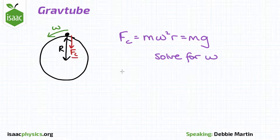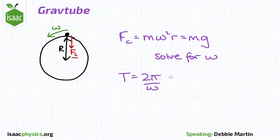We can solve this for omega and again use T equals two pi divided by omega to find our new time period, and compare this to the one found in the previous part.